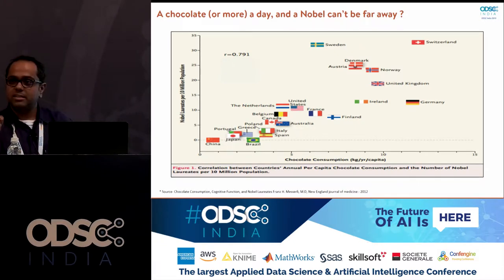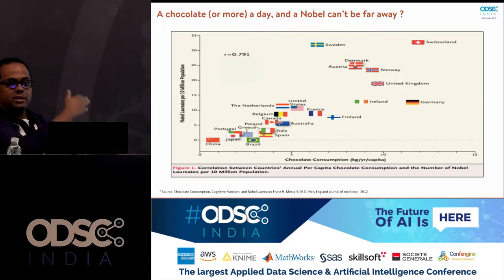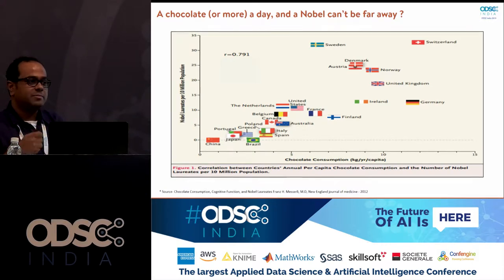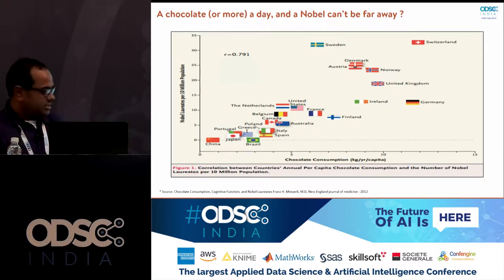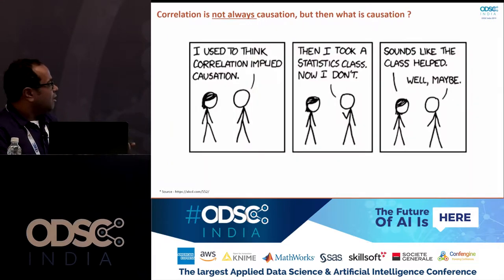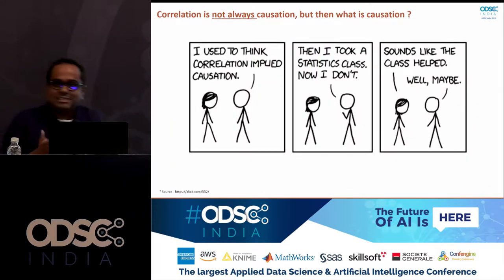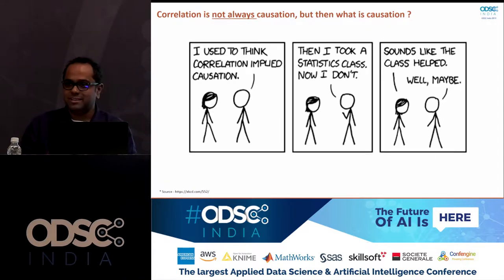This is one major reason — a lurking third factor that affects two variables — that leads to cases of what we call spurious correlation. I am sure you remember your stats 101 professor telling you that correlation is not always equal to causation. That is one of the reasons why you get to see such results. So if correlation is not equal to causation, then what is causation and how do we get to causal effects?